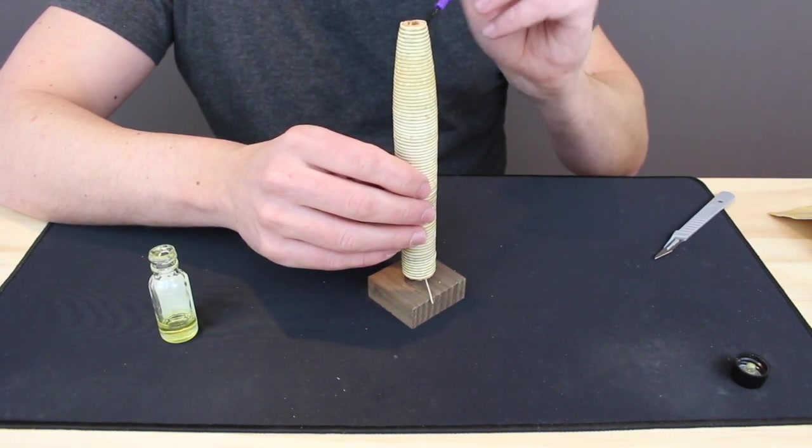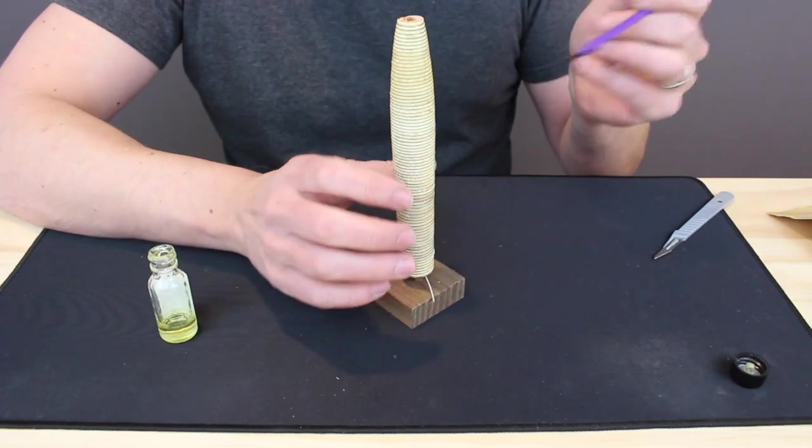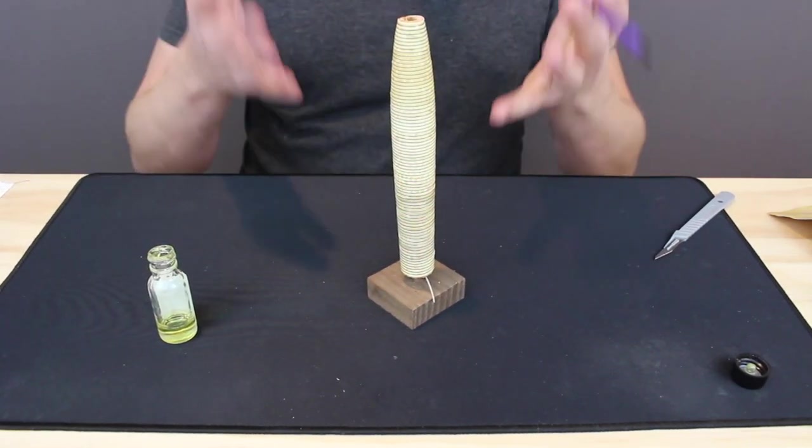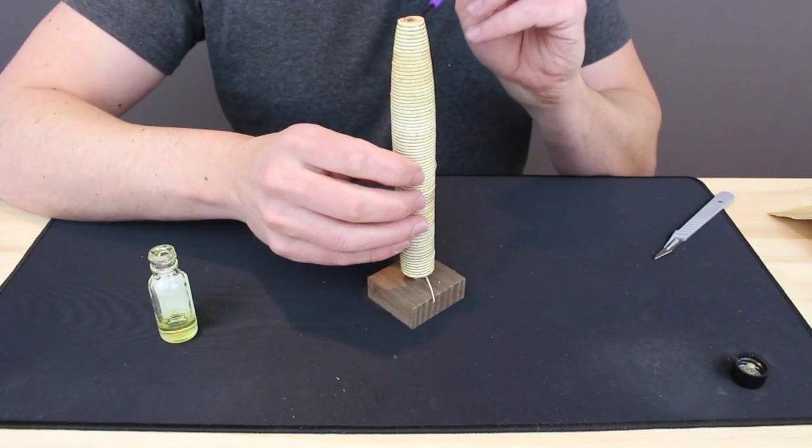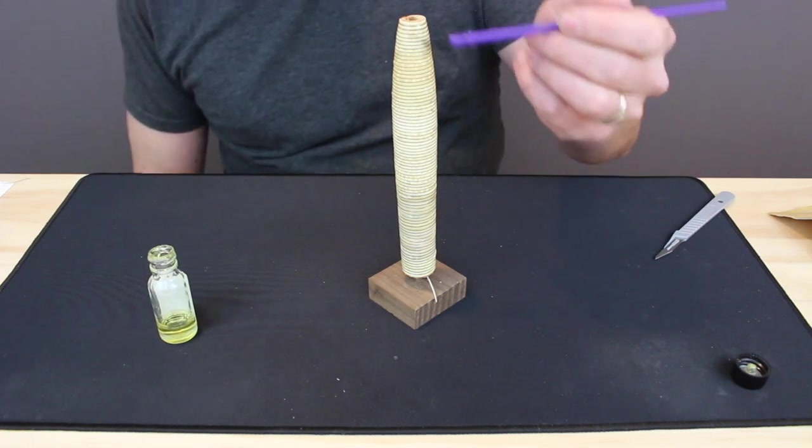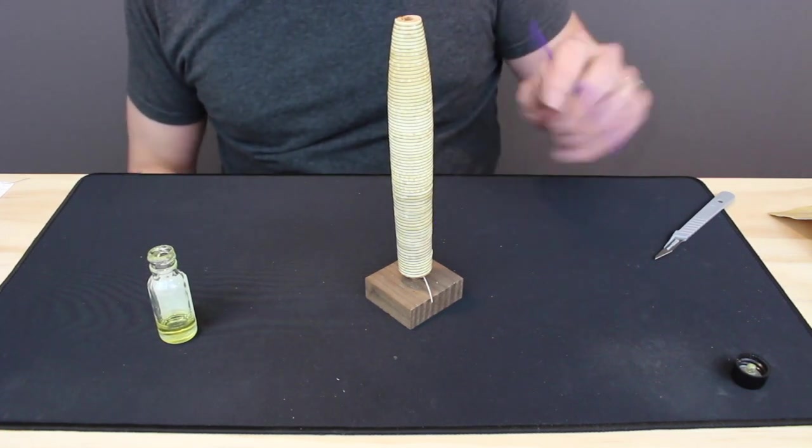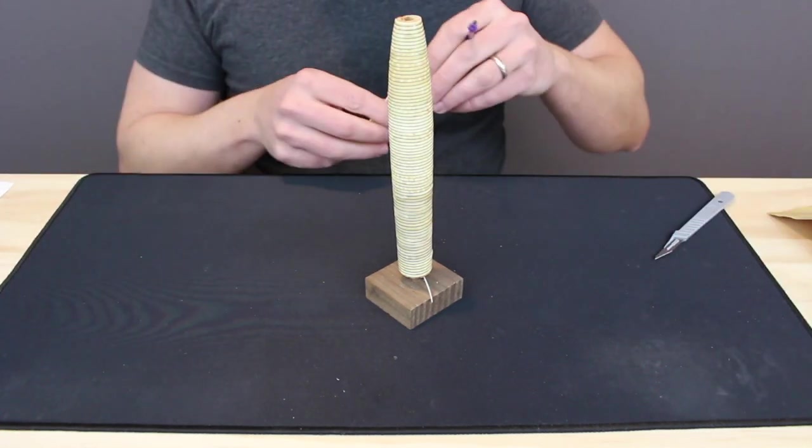With each subsequent coat, the grip's going to become a little darker and take on a bit more of the amber color from that spar varnish. Just continue down all the way to the bottom and let it dry for a few hours or overnight, then apply a second and, if you want, a third coat.